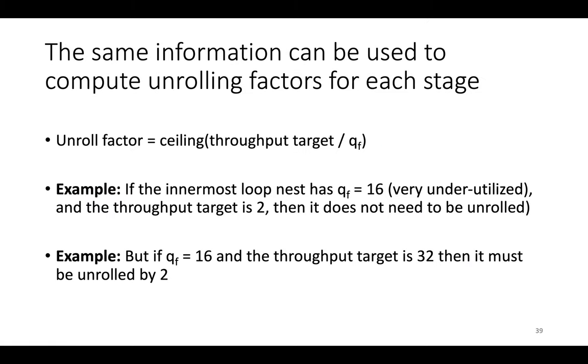If you've computed all Q factors for all levels of all loop nests, the unrolling factor in the innermost loop needed to reach the throughput target at the edge of the accelerator is the ceiling of the throughput target divided by the Q factor.